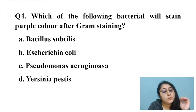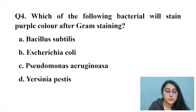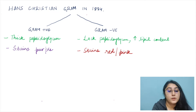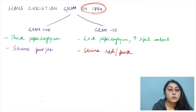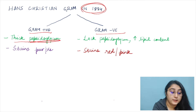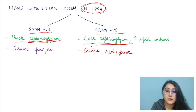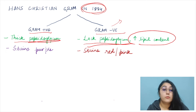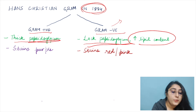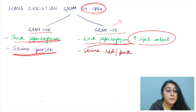Question four: which bacterium will stain purple after gram staining? Hans Christian Gram introduced this concept in 1884 to differentiate bacteria into two groups. Gram-positive bacteria have a thick peptidoglycan layer and stain purple, while gram-negative bacteria have a thin peptidoglycan layer with high lipid content and stain pink or red.